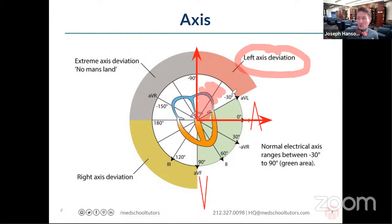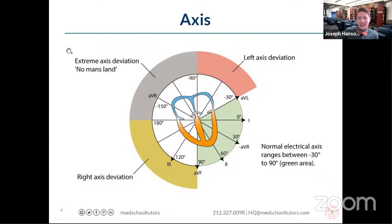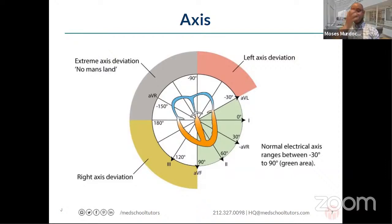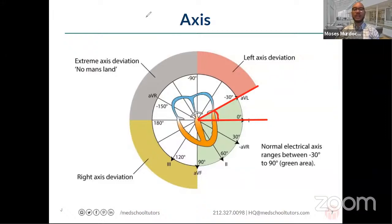One thing to add: normal axis can extend up to negative 30 degrees, so there's roughly a two-fifths chance of still being in normal range. A useful tiebreaker is to look at lead two — if you're negative in lead two, you're far more likely to have true left axis deviation or possibly even extreme axis deviation. So the two main leads to assess are one and AVF; if you need a tiebreaker, look at lead two.